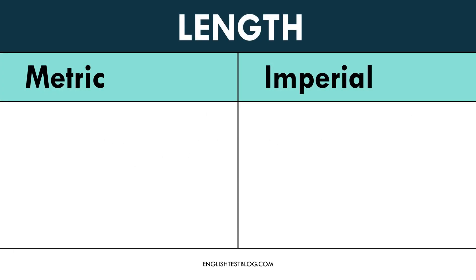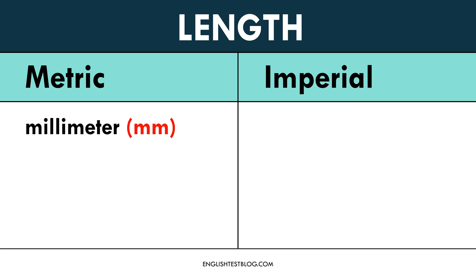Let's talk about length. In the metric system, we have the millimeter. A millimeter is a very small unit of length, often used to measure tiny objects like the thickness of a credit card or the width of a pencil tip. Next is the centimeter, commonly used for everyday measurements such as the height of a person or the length of a book. One centimeter equals 10 millimeters.